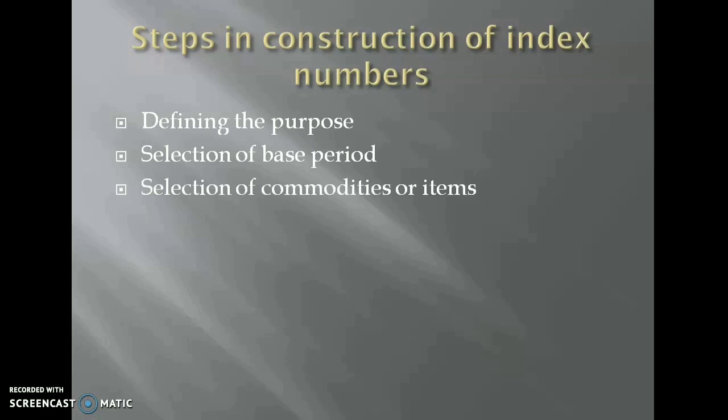The third one is selection of commodities or items. The selection of commodities basically depends on the purpose of survey. The next one is obtaining price quotation. We all know that the prices of many commodities vary from place to place and also shop to shop in some places. Price quotations are to be obtained first from different places, different agencies at regular intervals. Once after obtaining the price quotations, averages are taken and used in construction of index numbers.